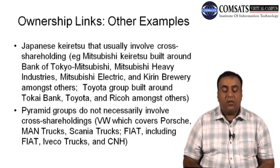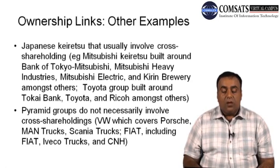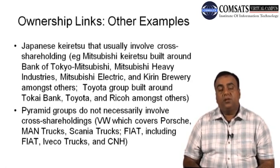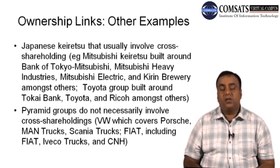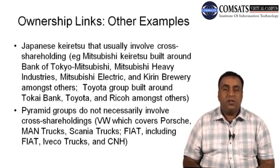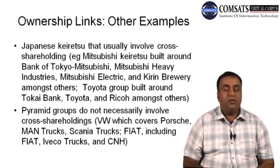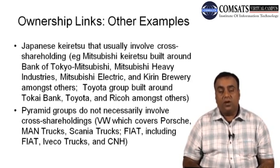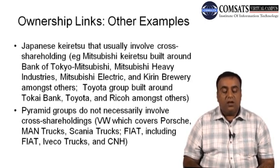Pyramid groups do not necessarily involve cross-shareholding but still have ownership links where the owner is the same. For example, Volkswagen covers Porsche, MAN Trucks, and Scania Trucks. Fiat includes Fiat, Iveco Trucks, and CNH. In pyramid groups, a number of companies are owned under a common structure without requiring cross-shareholding.